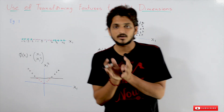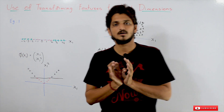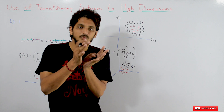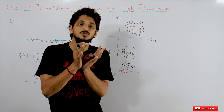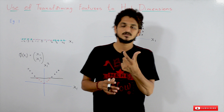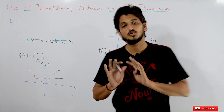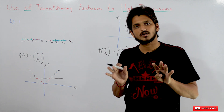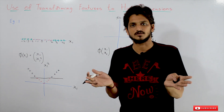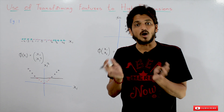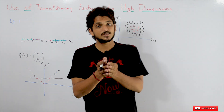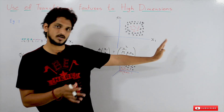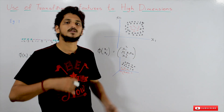In support vector machine we use a method called kernels, which helps reduce this computational cost. That is why support vector machines are most popular. Without the kernel method, support vector machine is just like logistic regression. What is this kernel method and how it helps us reduce computational cost while transforming data into higher dimensions — we will discuss that in our next class.